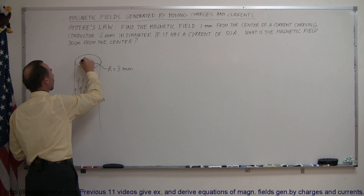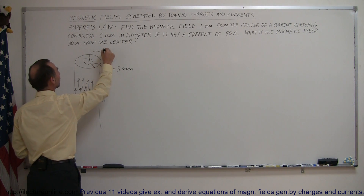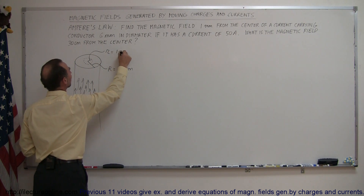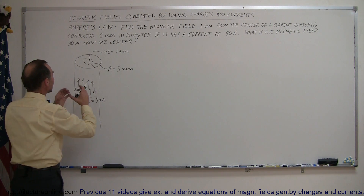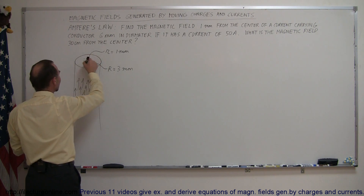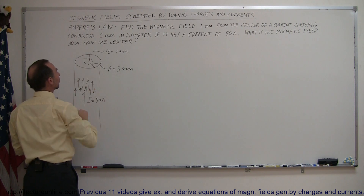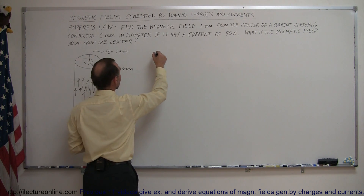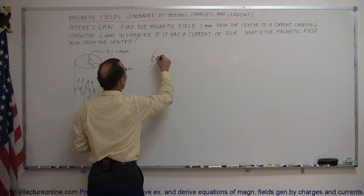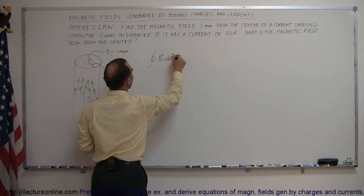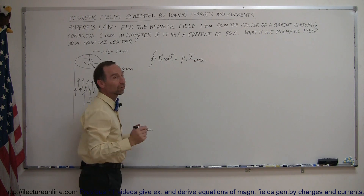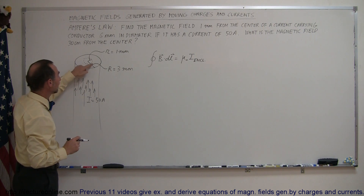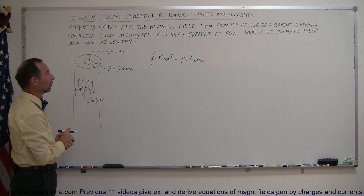We want to find out what the magnetic field is one millimeter away from the center. So let's make that small r equals 1 millimeter, and we want to know what the magnetic field is at that particular location. Imagine that we have an Ampere circle around that center where the radius is 1 millimeter. Using Ampere's law, we can say that the line integral of B dot dL is equal to mu sub naught times the current enclosed by that circle. The circle has a radius of 1 millimeter, because we want to put the edge of that circle right at the point where we want to know the magnetic field.